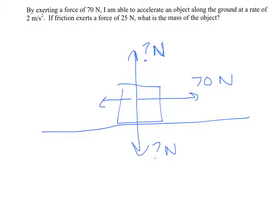Friction exerts a force of 25 newtons, again, in the opposite direction of the motion. So the net force is the difference between 70 and 25, which will be 45 newtons to the right.